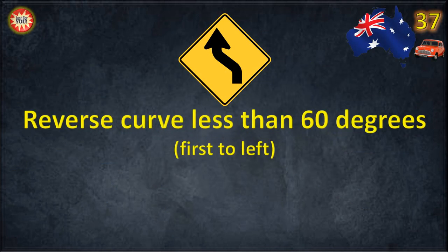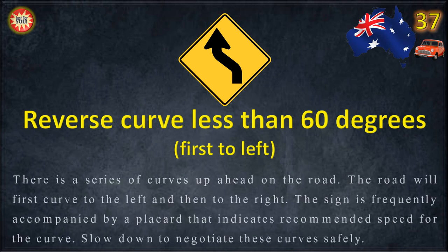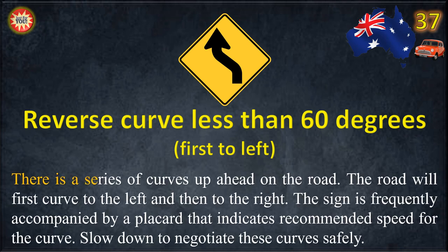Reverse curve less than 60 degrees, first to left. There is a series of curves up ahead on the road. The road will first curve to the left and then to the right. The sign is frequently accompanied by a placard that indicates recommended speed for the curve. Slow down to negotiate these curves safely.